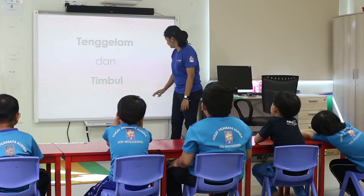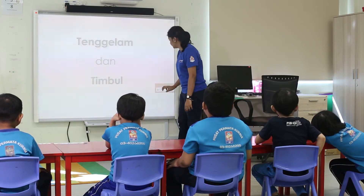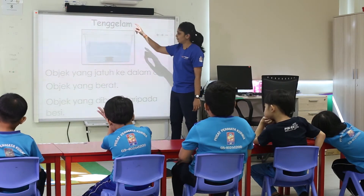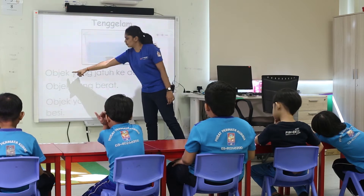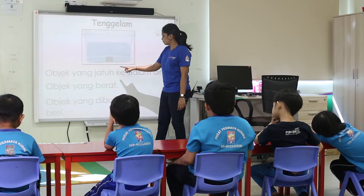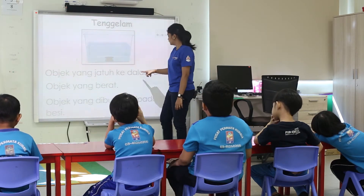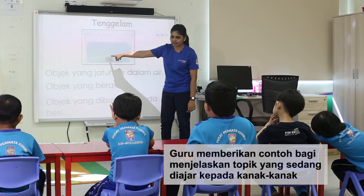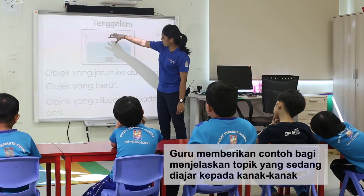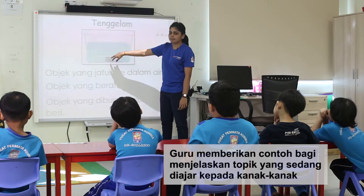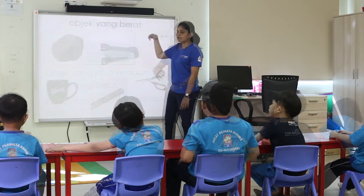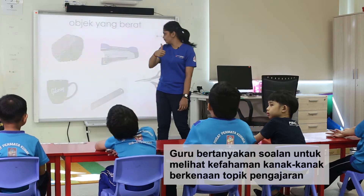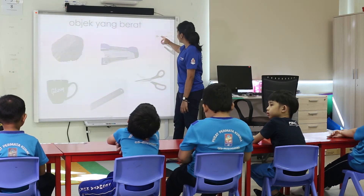Tenggelam dan timbul. Okey, jom kita tengok apa yang dimaksudkan dengan tenggelam. Tenggelam — objek yang jatuh ke dalam air. Dalam ni ada apa? Batu. Ni air, dalamnya ada batu. Kalau berat, dia tenggelam ke timbul? Tenggelam. Good. Kalau berat, dia tenggelam.